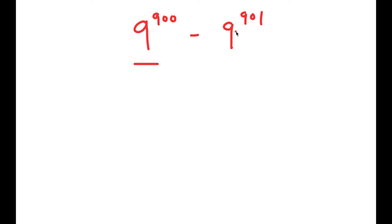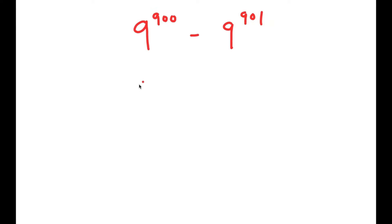The easiest way to solve this is to simplify as much as we can, and a way to do that is to factor out a term. Since 9 to the power of 900 is actually a factor of 9 to the power of 901, all we have to do is rewrite 9 to the power of 901 as something times 9 to the power of 900. We can use properties of exponents to do this.